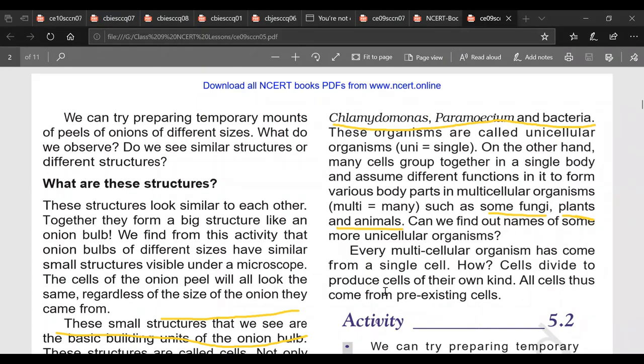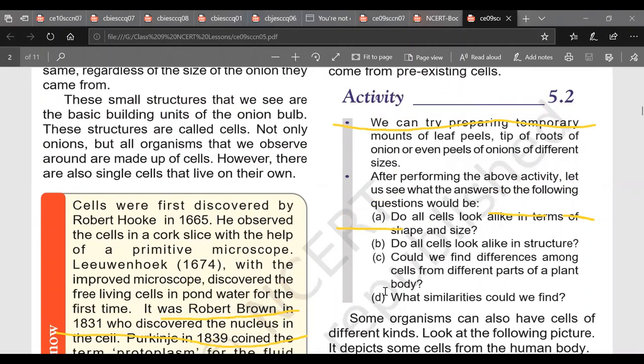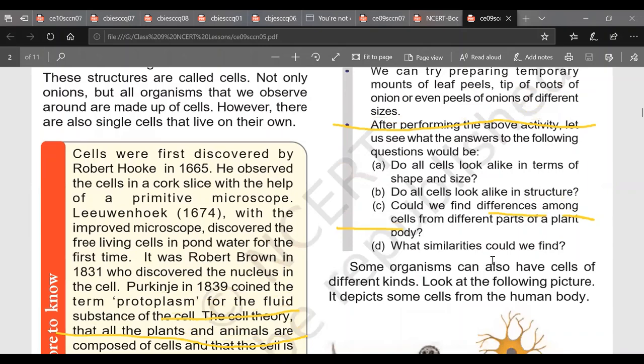Then comes, we can prepare temporary mounts of leaf peels, tip of roots and onion or even peels of onion of different sizes. There are some questions. Do all cells look alike in terms of shape and size? No. Do all cells look alike in structure? There can be little differences. Could we find differences among cells from different parts of the plant body? What similarities? There are some similarities, some differences. Some organisms can also have cells of different kinds.